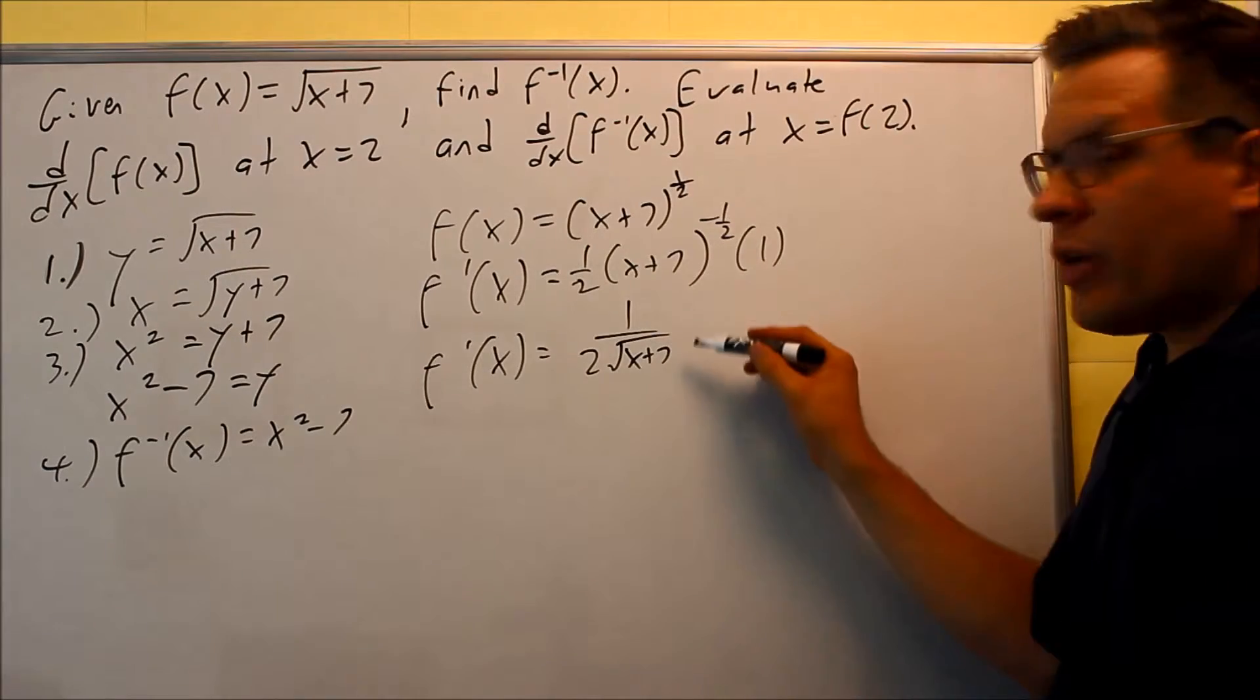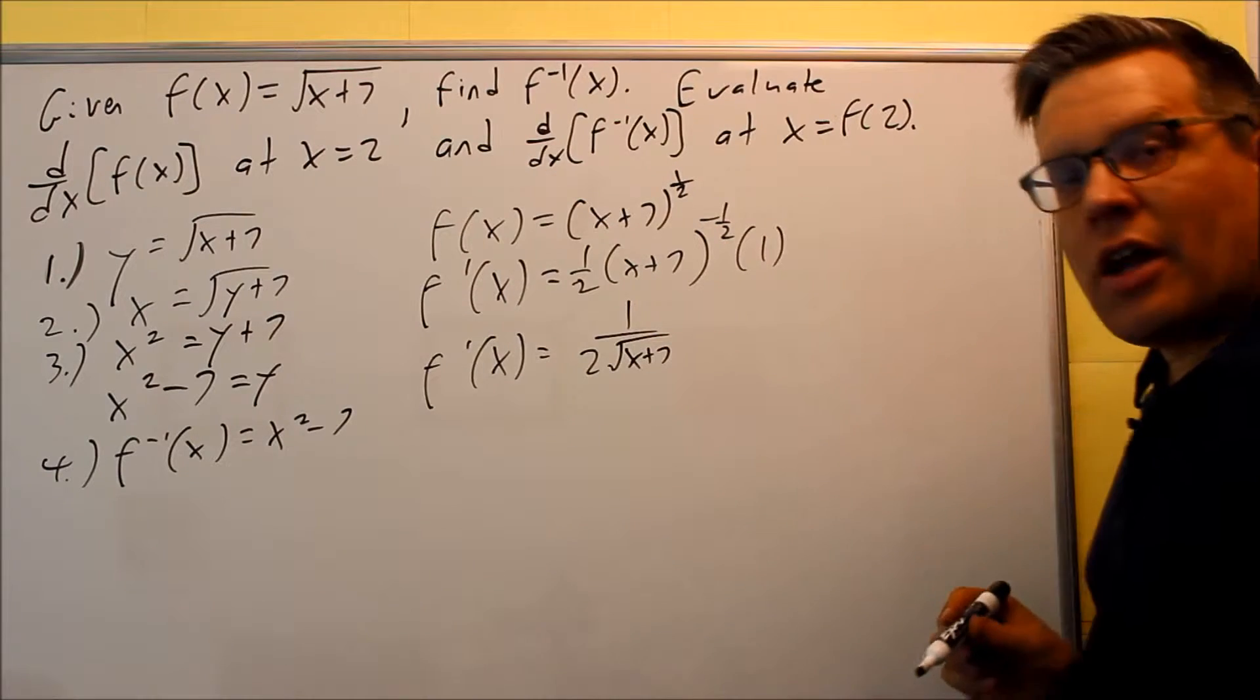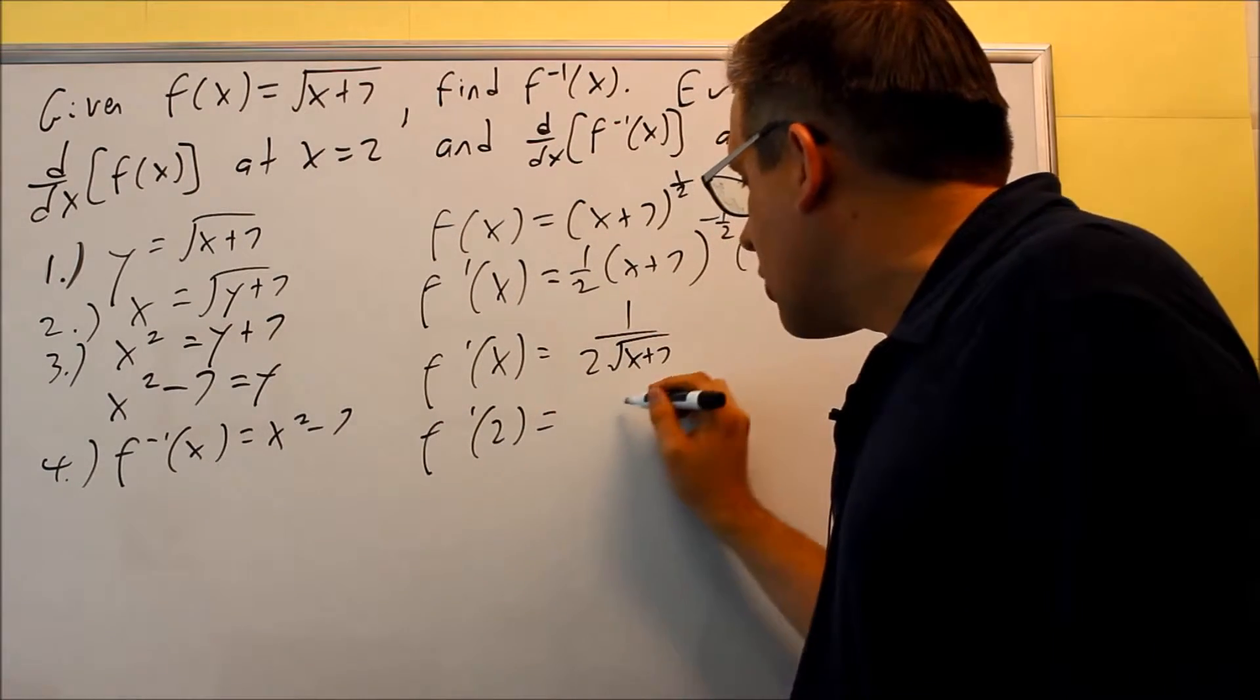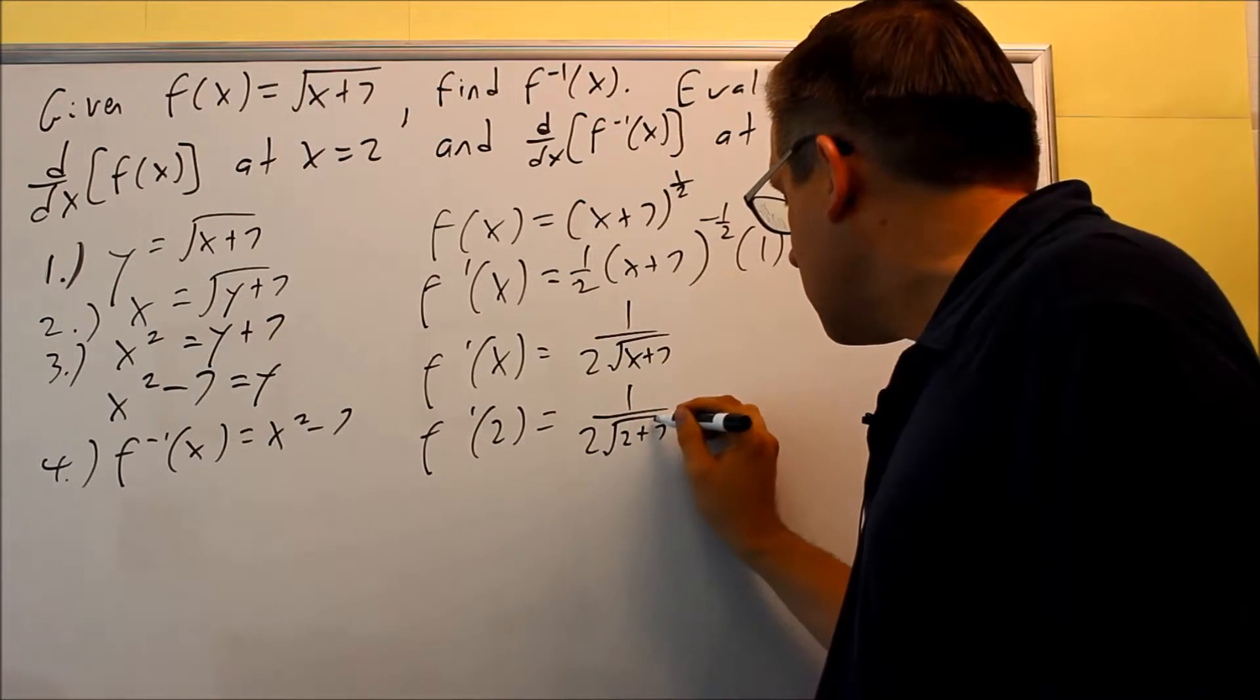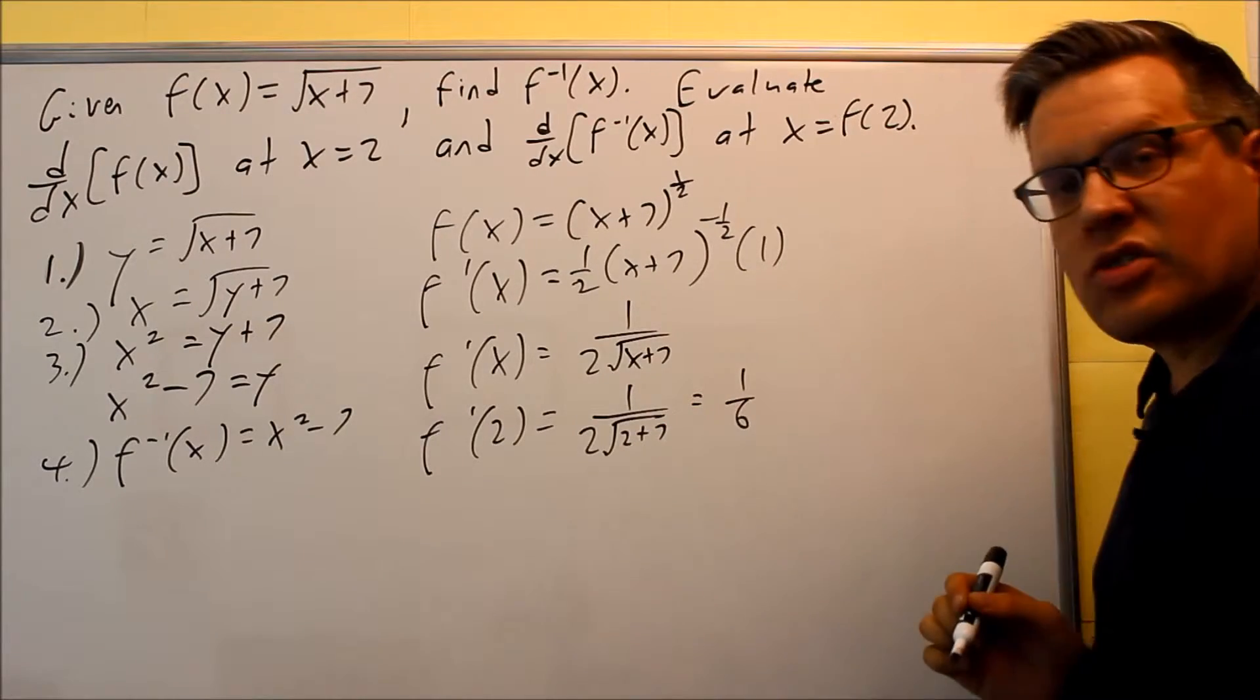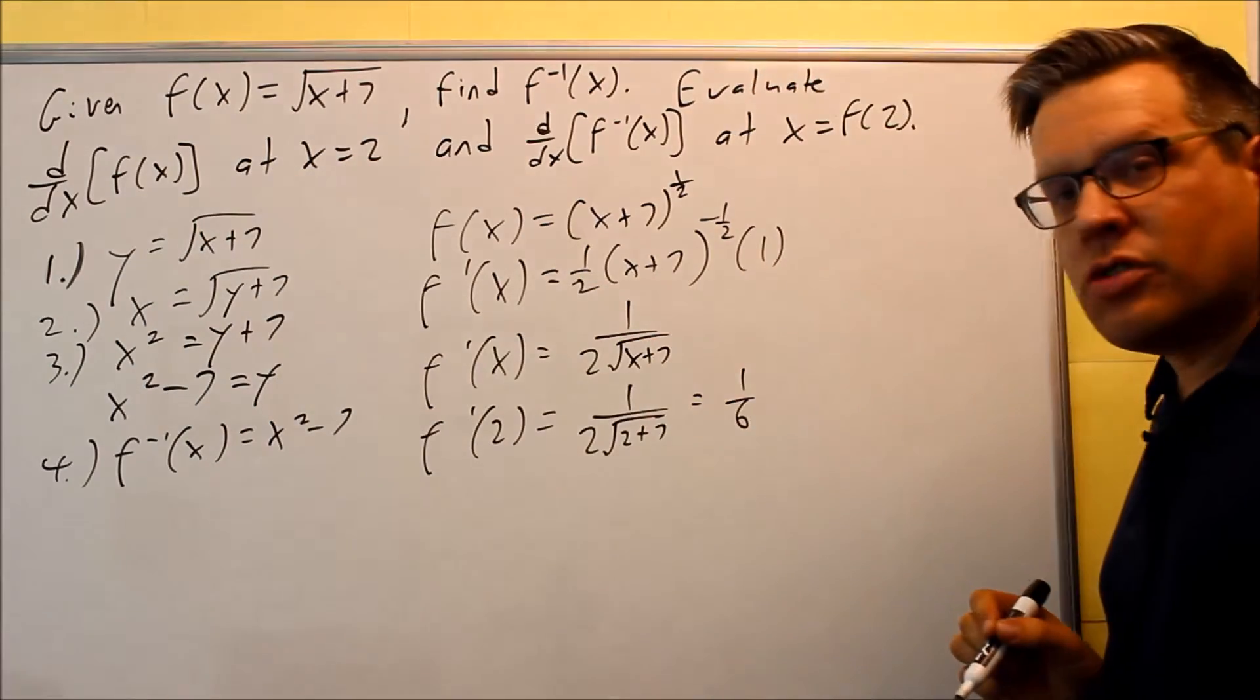Now we need to evaluate this at x equals 2. So f'(2) is 1 over 2 times the square root of 2 plus 7. That's 1 over the square root of 9, which equals 1/6. That's the first answer they want.